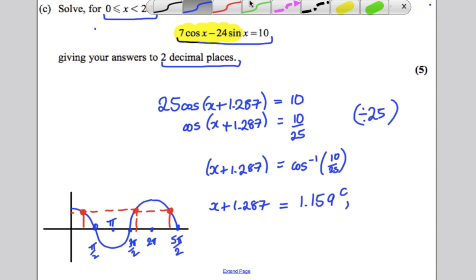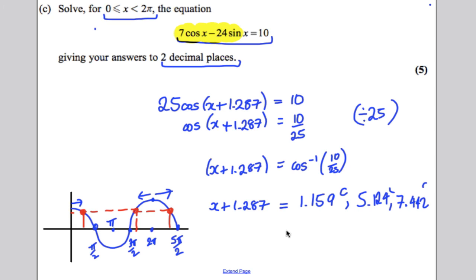So, what will our other solutions be? Well, here we have 1.159 from the tip, so here we're going to be back 1.159 from the tip and forward 1.159. So our solution would be 2 pi, subtract 1.159, which is equal to 5.124, and the other one would be 2 pi plus 1.159, which would be 7.442, all of these are radians.